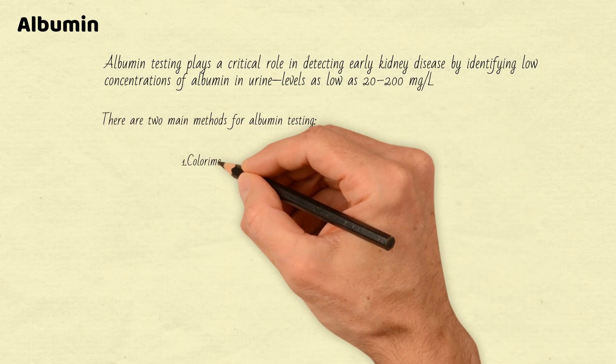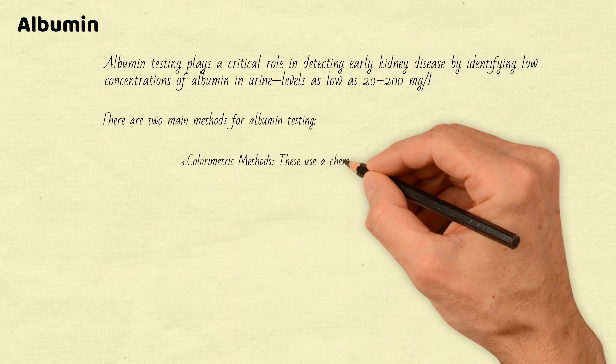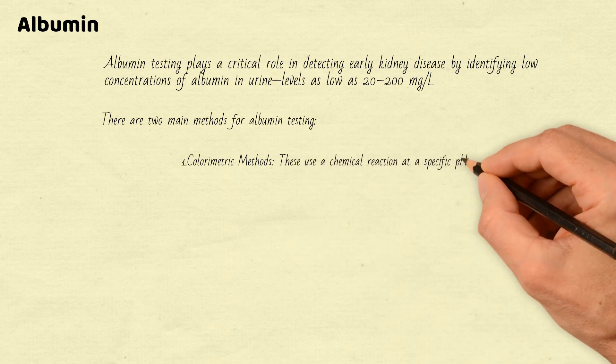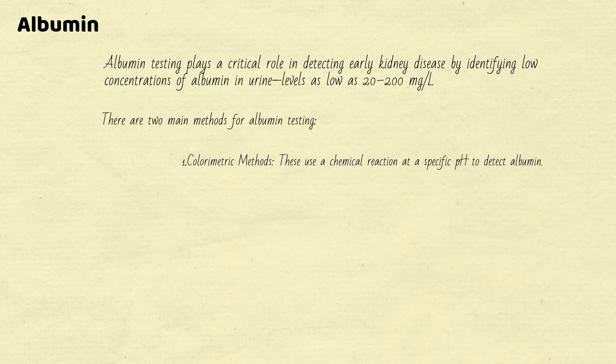There are two main methods for albumin testing. 1. Colorimetric methods: These use a chemical reaction at a specific pH to detect albumin. An example is the Clinitec microalbumin reagent strip, which provides semi-quantitative albumin and albumin-to-creatinine ratio (ACR) results when analyzed on a Clinitec Status device.